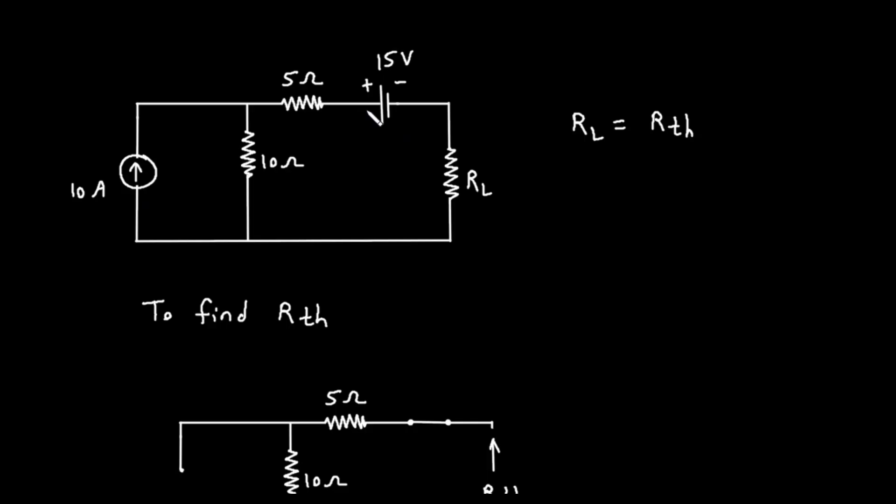An ideal current source is deactivated by replacing it with an open circuit. This means we remove the current source, leaving a break in the wire where it used to be. An open circuit allows zero current to flow, which is what a turned off current source does.